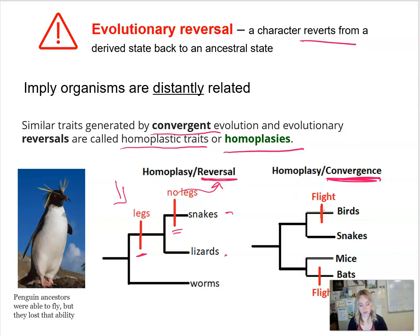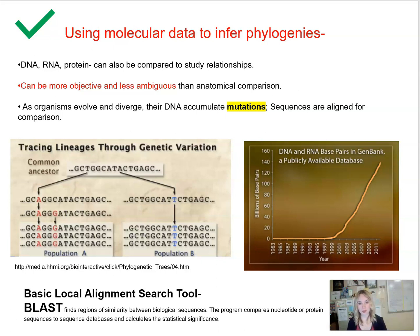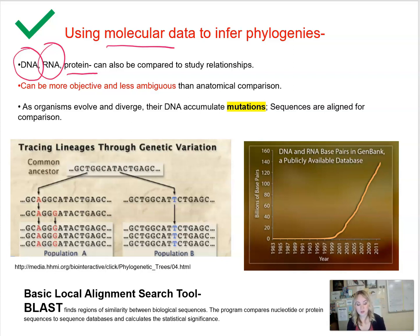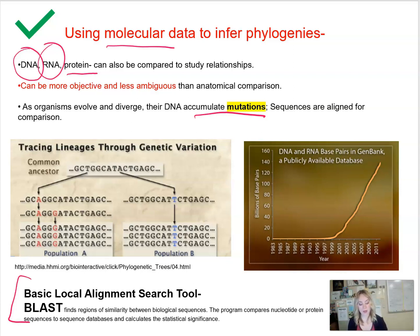More reliable data for inferring phylogenies comes from molecular data, because we can compare DNA, RNA, and proteins more objectively. We compare the number of mutations within the DNA to derive evolutionary relationships among organisms. There is a publicly available database called BLAST — Basic Local Alignment Search Tool — where we can enter a desired gene, run it against the database, compare it to available sequences, and find very close matches to build phylogenetic trees.